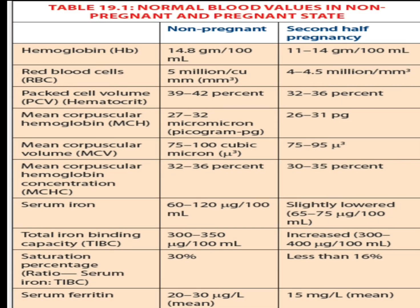This table shows normal blood values in non-pregnant and pregnant states. Hemoglobin: 14.8 g/dL in non-pregnant, and 11–14 g/dL in the second half of pregnancy. Red blood cells: 5 million in non-pregnant, and 4 to 4.5 million in the second half of pregnancy. Packed cell volume or hematocrit: 39–42% in non-pregnant, and 32–36% in the second half of pregnancy.